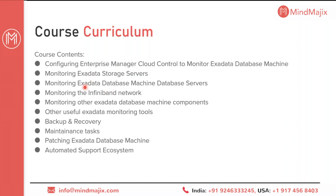Next we step into the monitoring part — Exadata Database Machine platform monitoring. We cover how to monitor your database machine through Cloud Control, how to monitor Exadata storage servers through Cloud Control as well as through the command line interface. We have commands like cell CLI, exa CLI, and dbm CLI. We also see how to monitor InfiniBand network, power distribution units, Cisco switches, and other components. Additional monitoring tools include ExaCheck, ExaWatcher, DFS Collector, and Trace File Analyzer. We then cover backup and recovery, maintenance tasks like replacing SSDs and hard drives, patching, and Automatic Service Request (ASR).